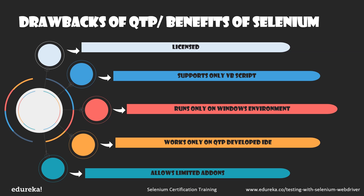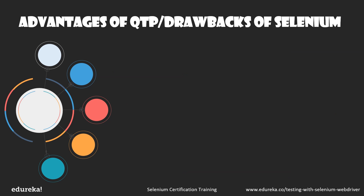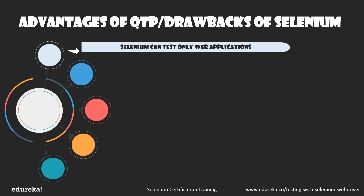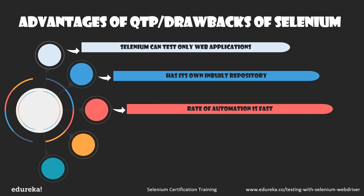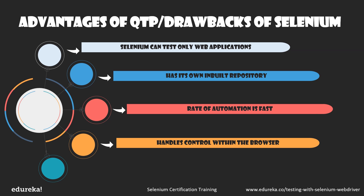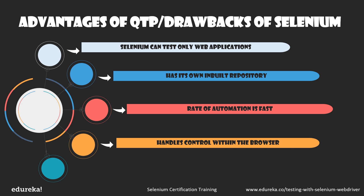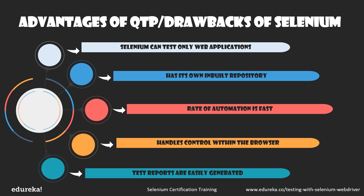Now let's look at the advantages of QTP over Selenium. QTP can test web, mobile, and desktop applications, whereas Selenium tests only web applications. It has its own inbuilt object repository where all information regarding test cases is stored. The rate of automation in QTP is fast compared to Selenium. QTP can handle controls within the browser like the favorites bar, address bar, and back and forward buttons. It also provides functional user support and generates test reports automatically, which does not happen in Selenium.